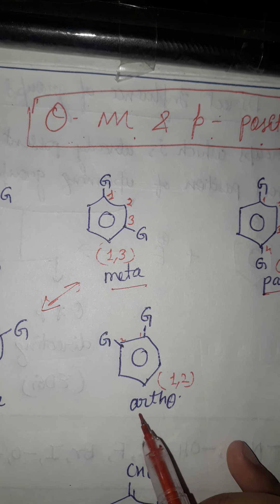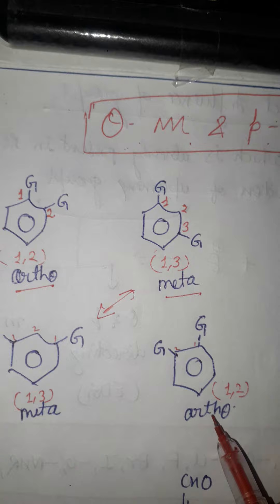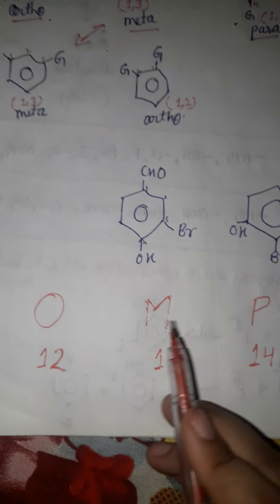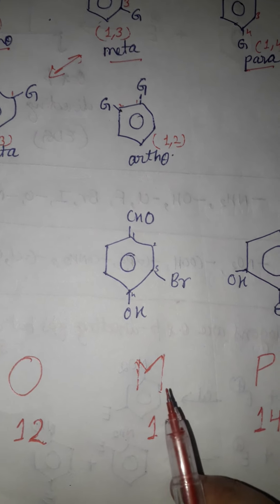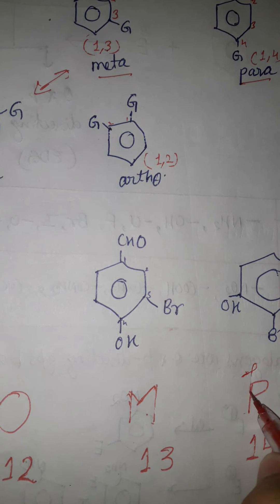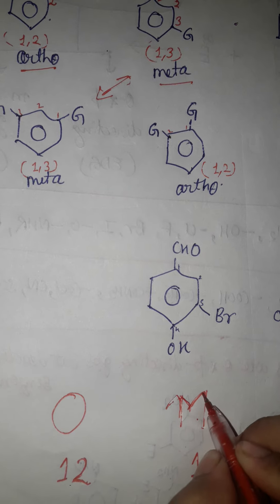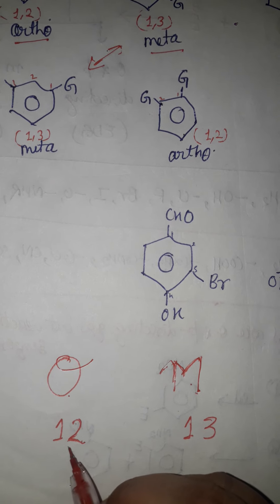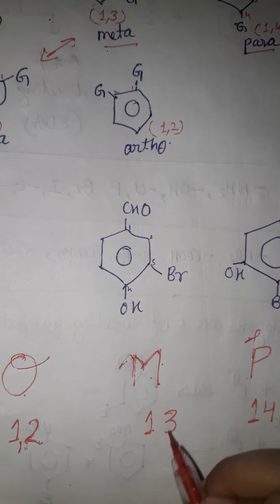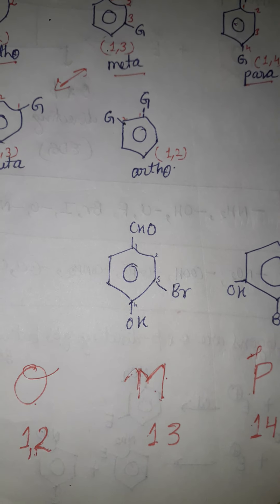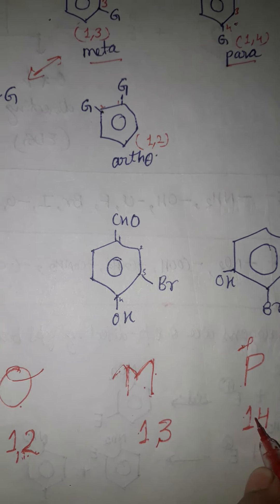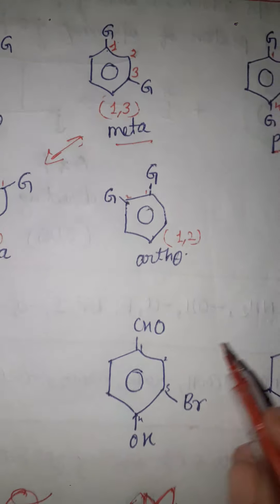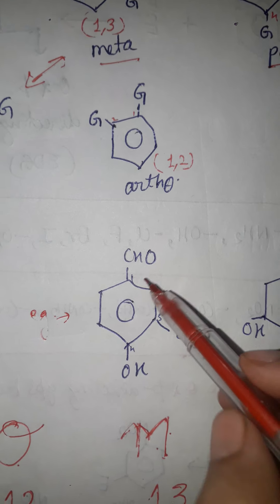I have prepared a trick for you: O, M, P — O is for ortho, M is for meta, P is for para. Always remember: ortho is 1,2 — meta is 1,3 — para is 1,4. So just learn it as 1,2 / 1,3 / 1,4 corresponding to ortho, meta, para.